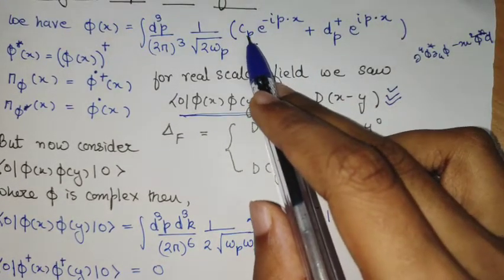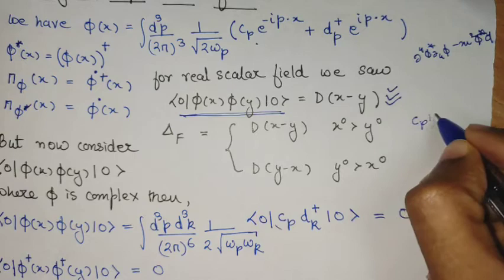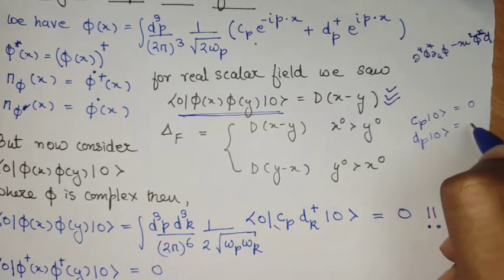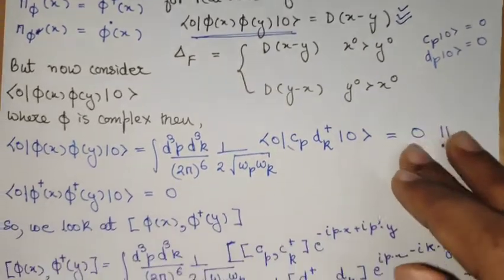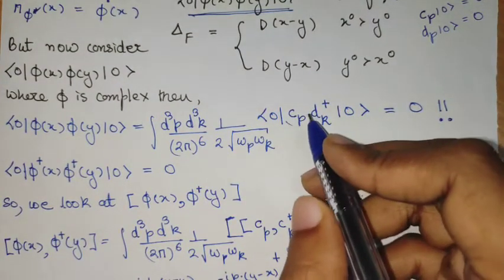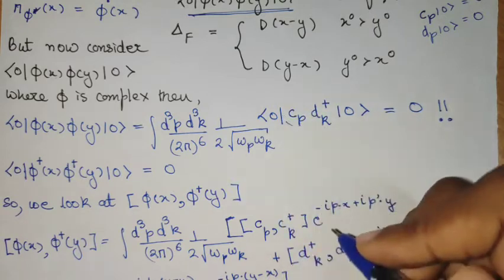Because anyway, because the vacuum gets annihilated by the CP and DP, because of this relation here, this can be the only possible non-zero term.